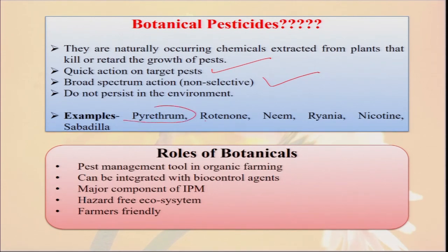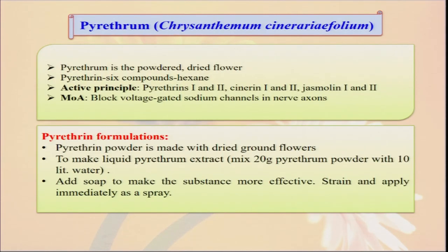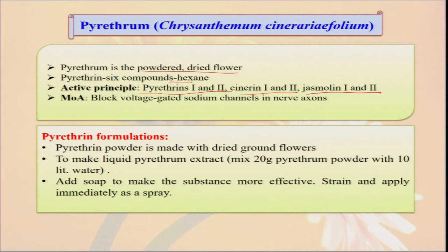There are some different types of botanical pesticides: pyrethrum, rotenone, neem, ryania, nicotine, and sabadilla. These have a role in pest management in organic farming — they can be integrated with bio control agents and are also hazard-free ecosystem and farmer-friendly. One very important one is pyrethrum, derived from Chrysanthemum cinerariaefolium. It is a powder from dried flowers. It has 6 active principal compounds — pyrethrins 1 and 2, cinerins 1 and 2, jasmolins 1 and 2 — and these molecules have a very high capacity to control different types of causal organisms. We should promote their use in organic farming.